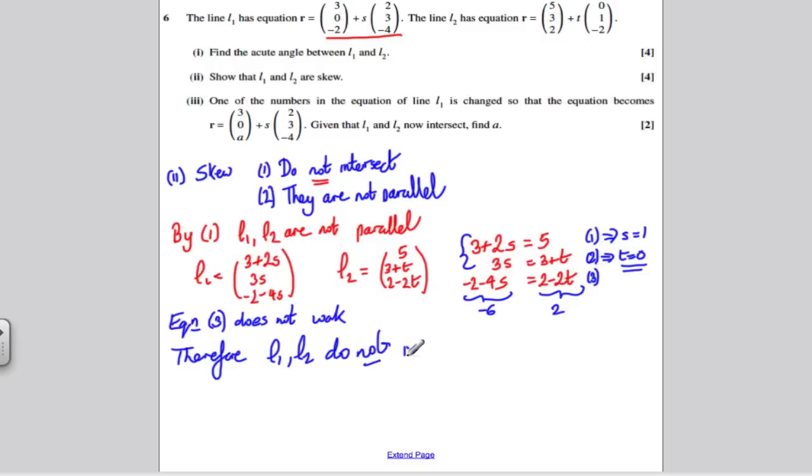Therefore, L1 and L2 do not intersect. They do not intersect. Now, given we already know they're not parallel, and the second thing, they don't intersect, therefore, L1 and L2 are what's called skew.